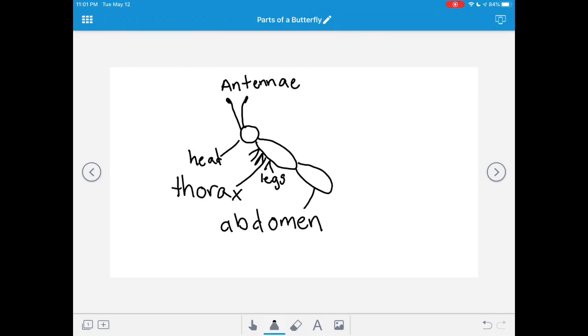Next, let's draw the butterfly's proboscis. The proboscis comes from the head and is a straw-like feature that helps it drink up its nectar from the flowers. When the butterfly is not using its proboscis, they curl it up in a spiral. Watch me. Go ahead and draw the butterfly's proboscis. I'll do it one more time.